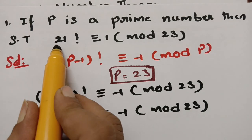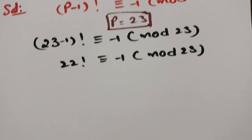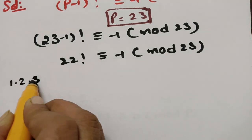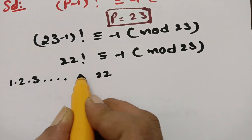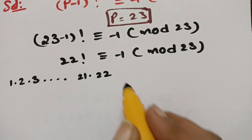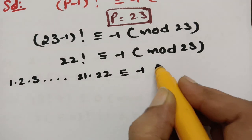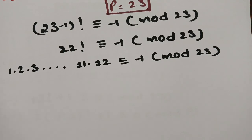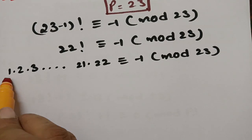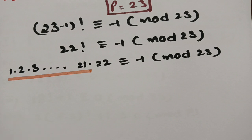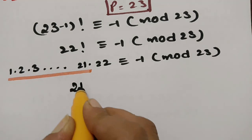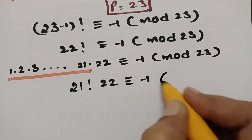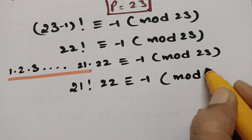Since the question needs 21!, we expand 22! as 1 × 2 × 3 × … × 21 × 22. So 22! = 21! × 22, which is congruent to −1 (mod 23). Therefore, 21! × 22 ≡ −1 (mod 23).